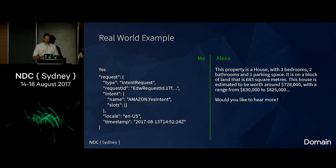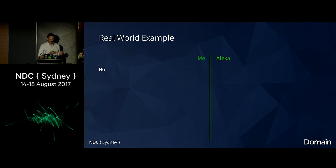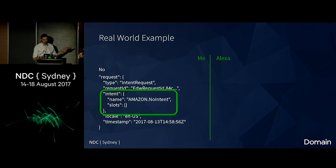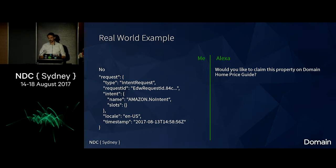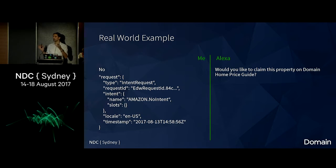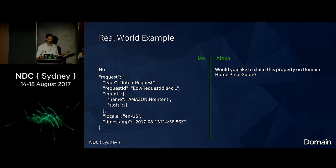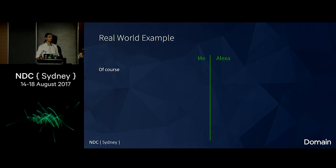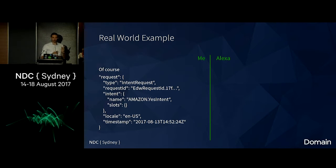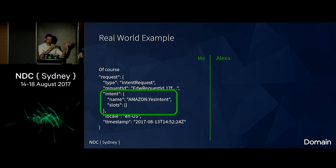We're running out of time, so I'm going to say no, I don't want to hear more. I get the no intent — everything works as expected. 'Would you like to claim this property on Domain Home Price Guide?' Since there's no screen, there's no way for users to discover what they can access, so when they're just about to exit, suggest something useful that's just a yes or no answer. I say 'of course' and it still picks up the yes intent — that's something Amazon handles. It knows multiple ways of saying yes and maps it automatically.